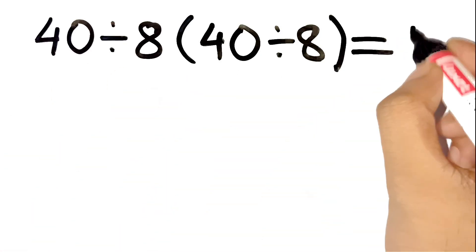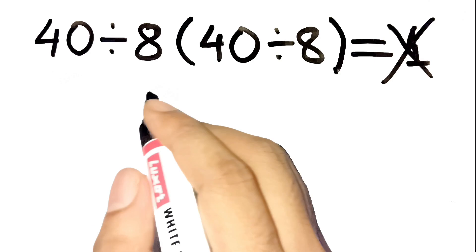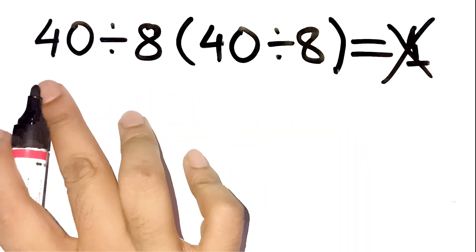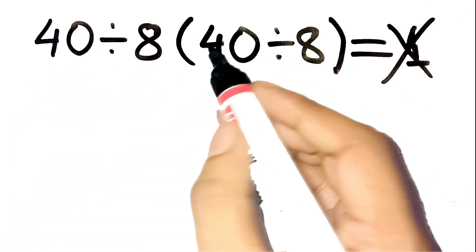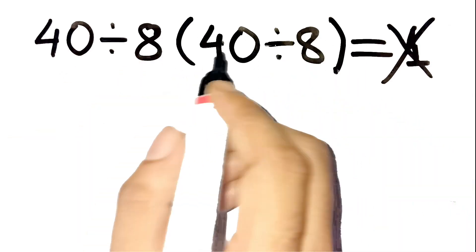Wait, if you think the answer is 1, you are absolutely wrong. Yeah, I know, I see it all the time. People look at this 40 divided by 8 open parenthesis, 40 divided by 8 closed parenthesis and think, easy.